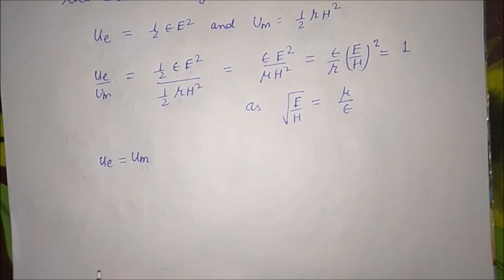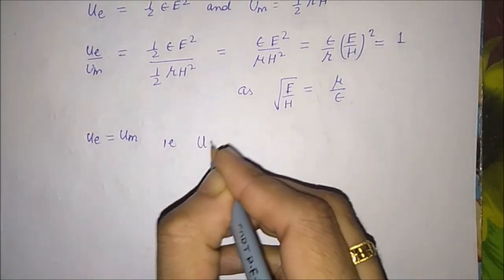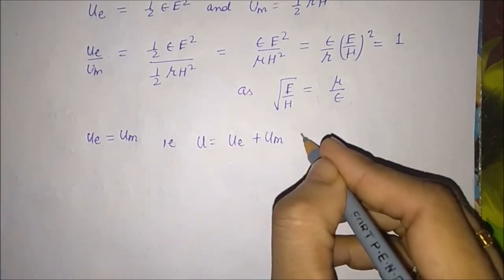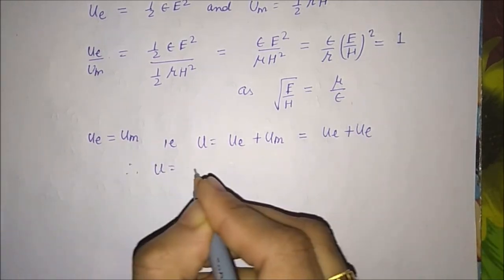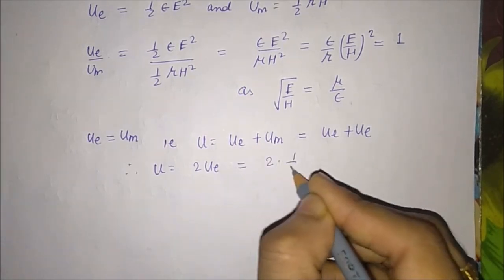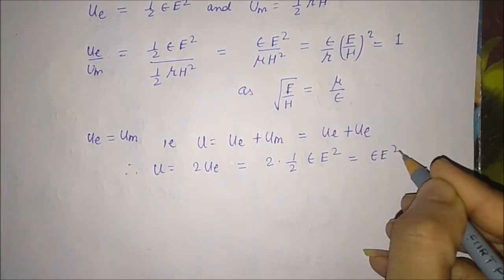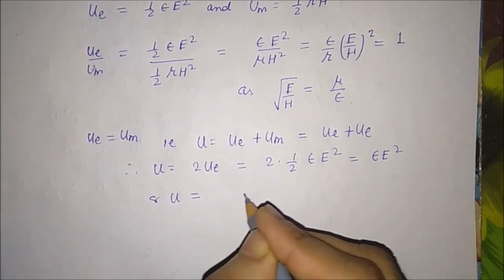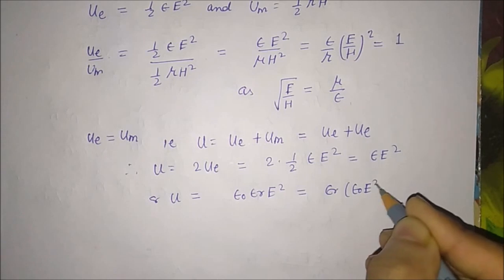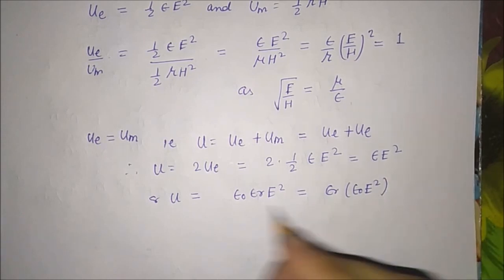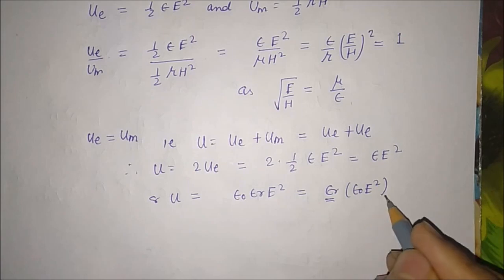So u_e equals u_m. The total energy density u equals u_e plus u_m equals 2 u_e equals epsilon E². We find that the total energy density is epsilon_r times the energy density of the same wave propagating in free space.